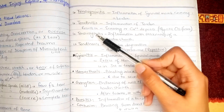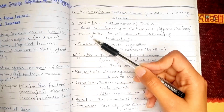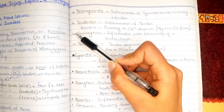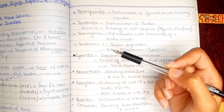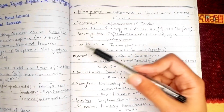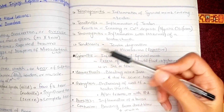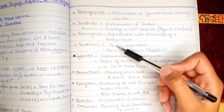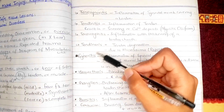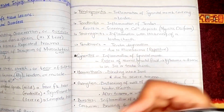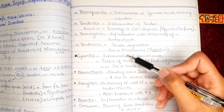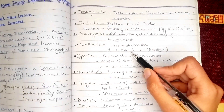Tenovaginitis is the inflammation of the tendon sheath — the sheet that covers the tendon. Tendinosis is degeneration of the tendon, with no inflammation, as there is no 'itis' in the term. It refers only to degeneration of the tendon due to repetitive microtrauma.